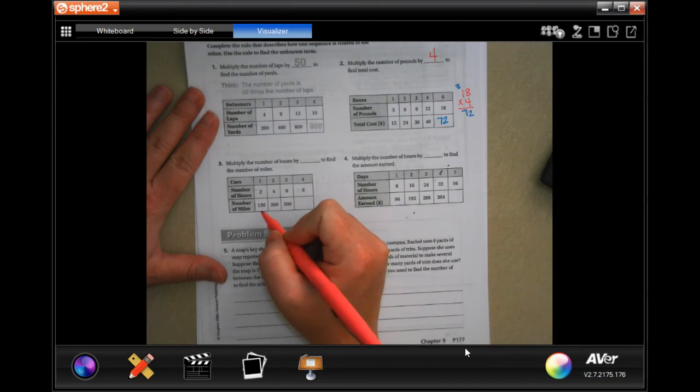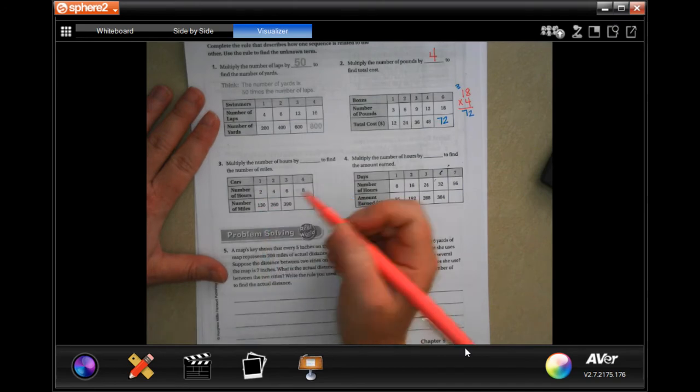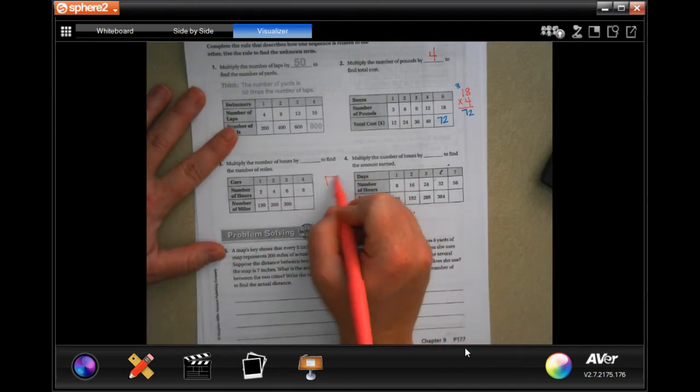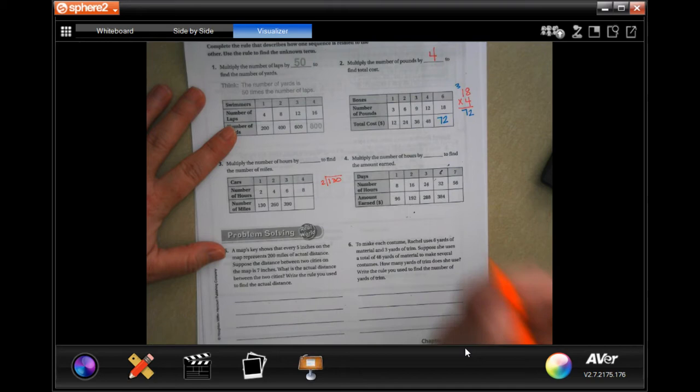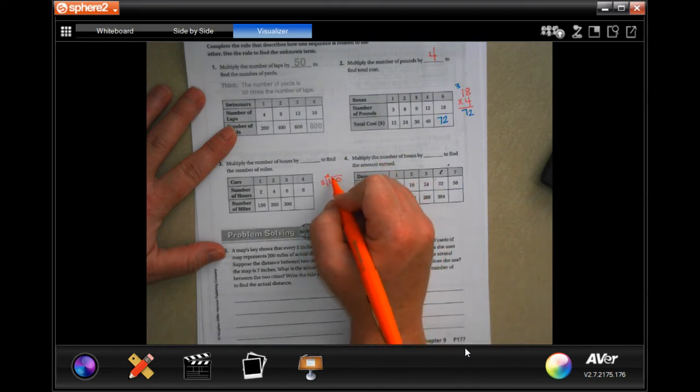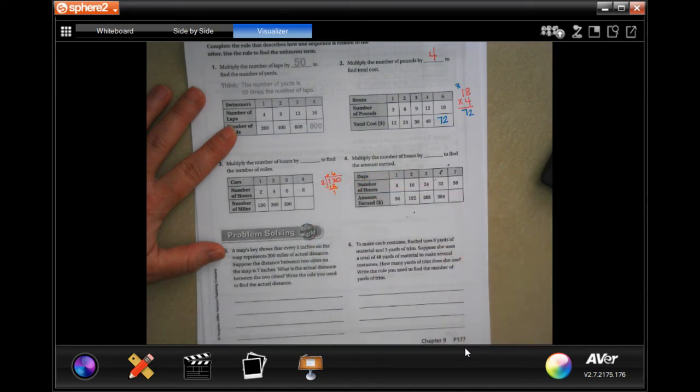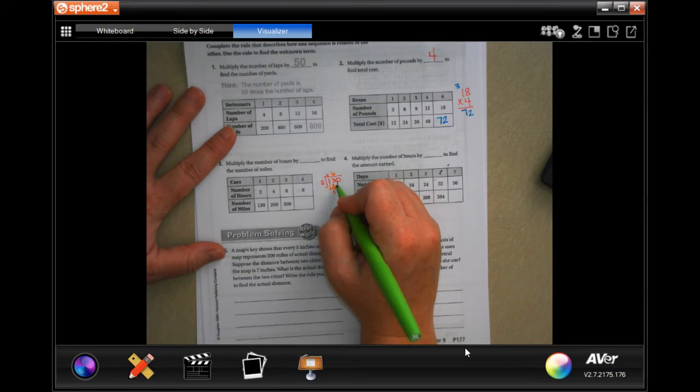We're gonna follow the pattern. Two times what is 130? Well, I don't know that off the top of my head, so I'm gonna divide 130 by two. Two goes into 13 six times. Six times two is 12, you have one left over. Bring down my zero, and two goes into ten five times. Five times two is ten, get zero, so 65.